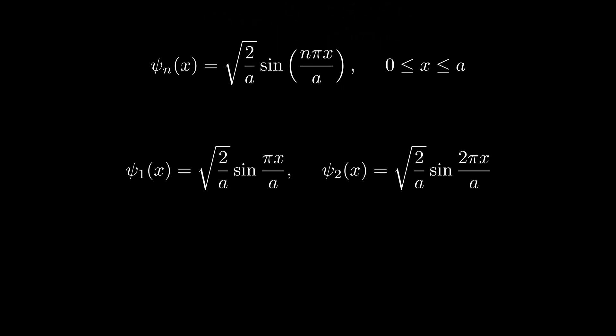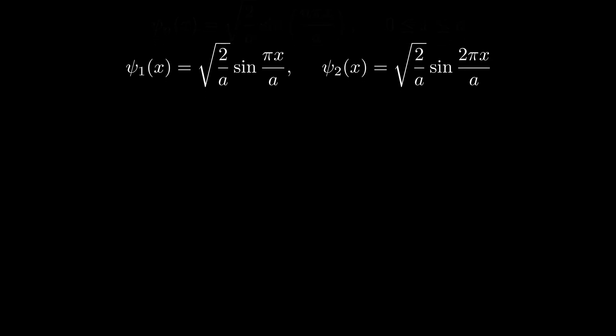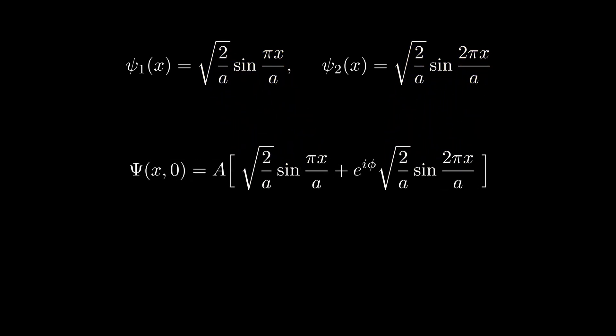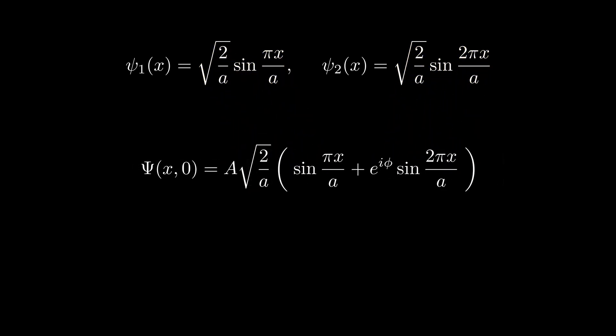The initial wave function at time t = 0 is a superposition of these two states, but with a phase shift applied to ψ₂(x). Now we substitute these explicit forms into our equation to express ψ(x, 0) entirely in terms of sine functions. Here, small a represents the width of the well, while capital A is the normalization constant.